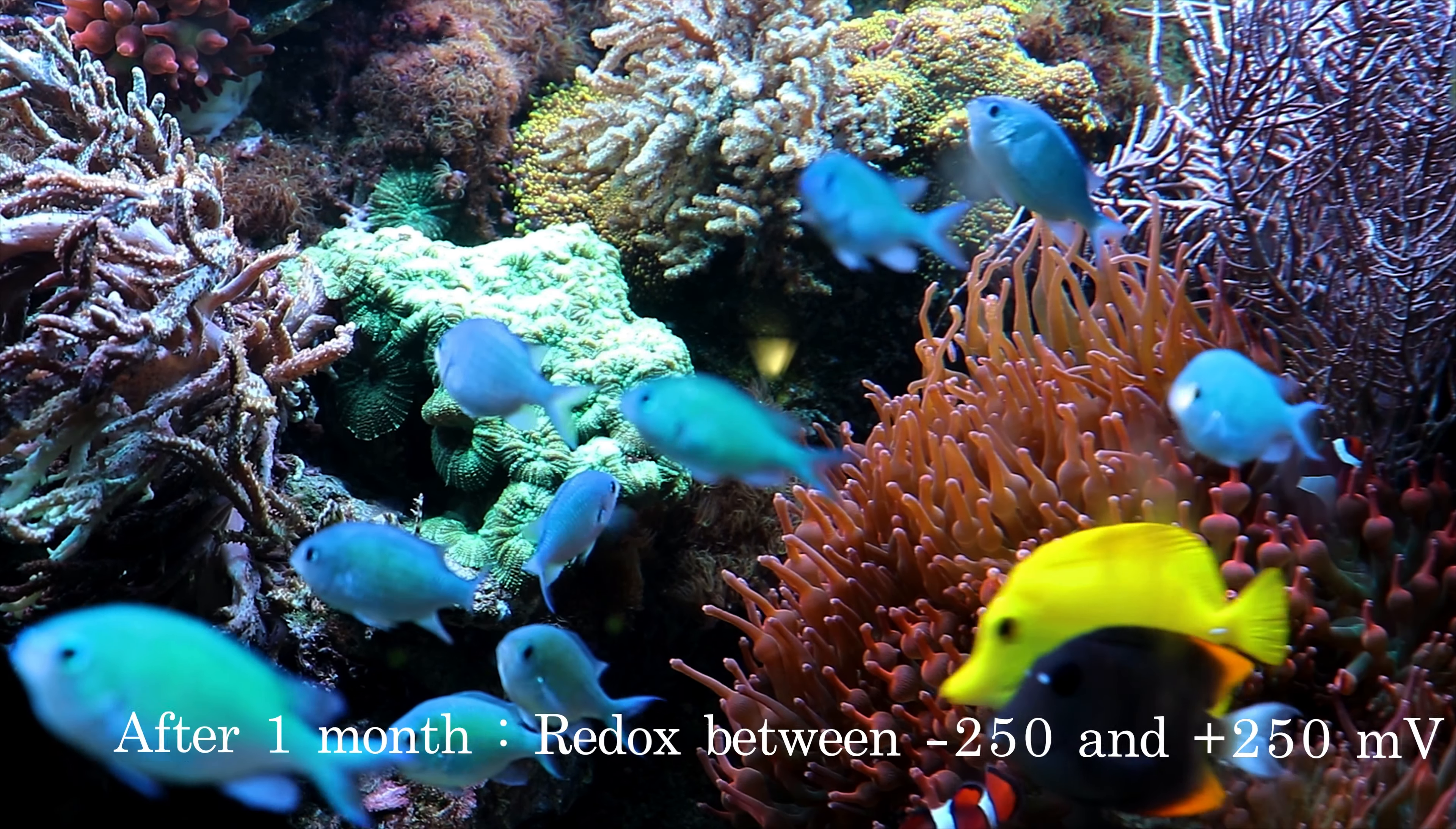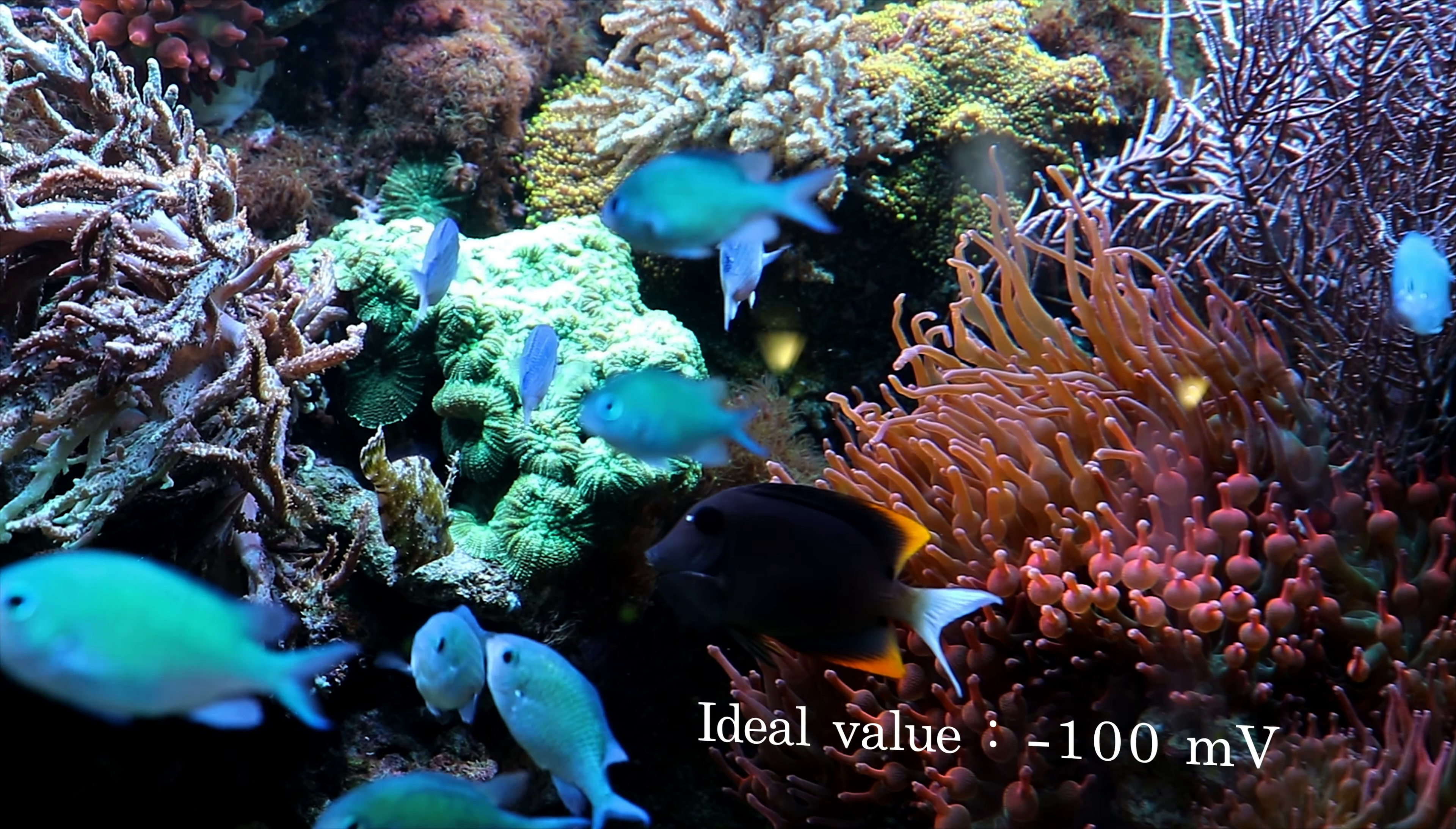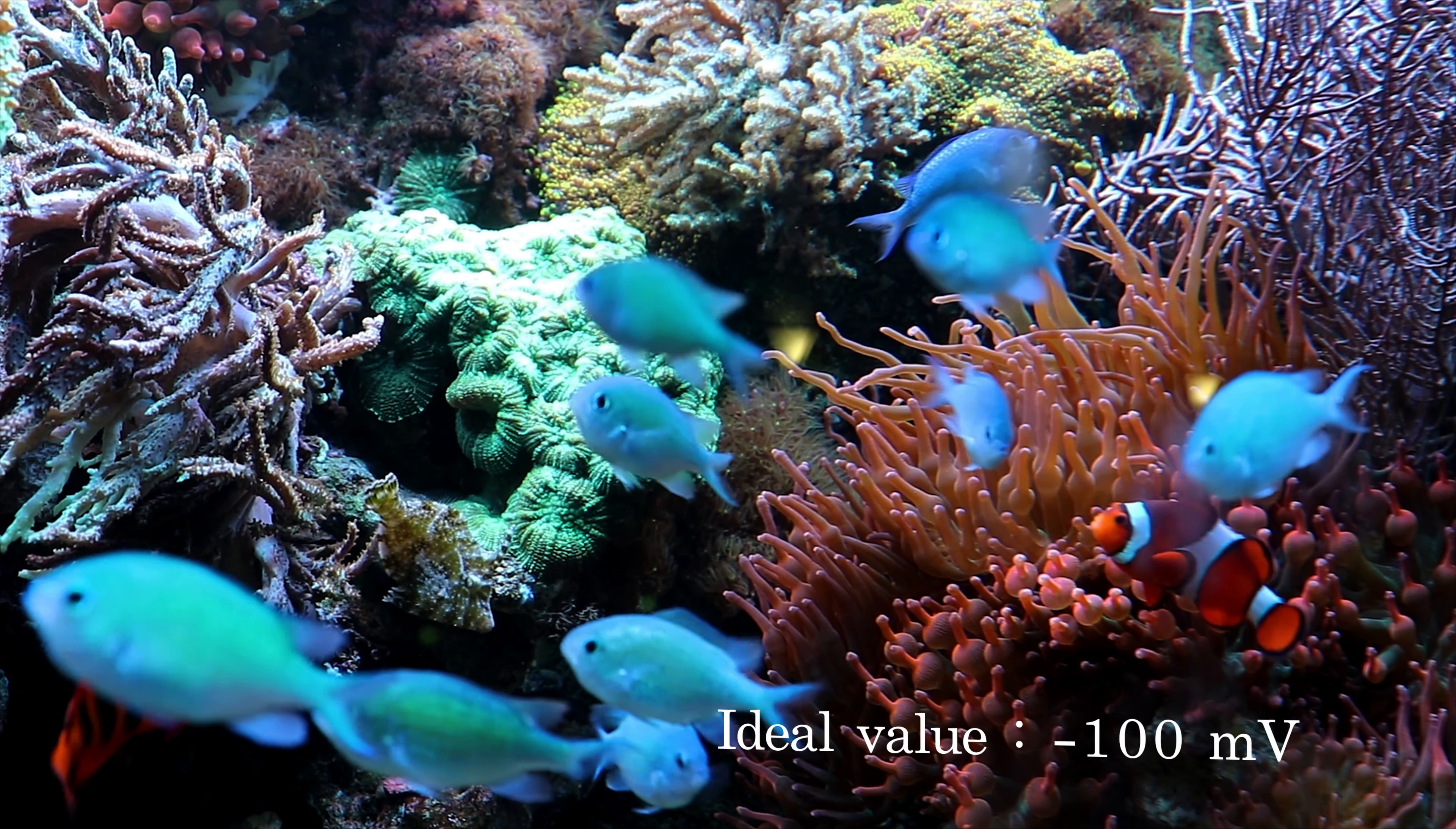The redox value can fluctuate from minus 250 to plus 250. The ideal value is minus 100, so check the redox every time you feed the fish.